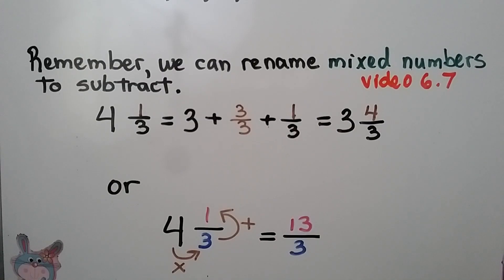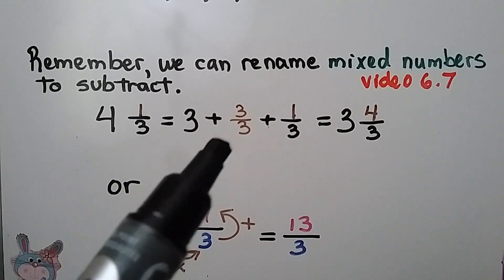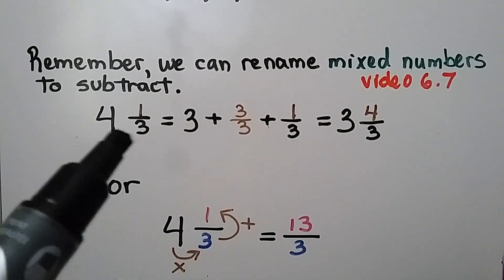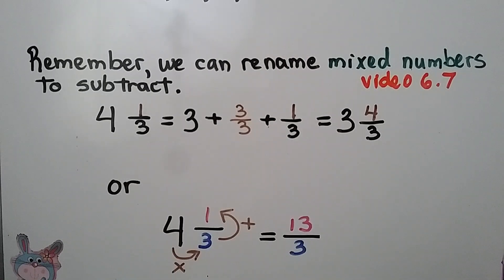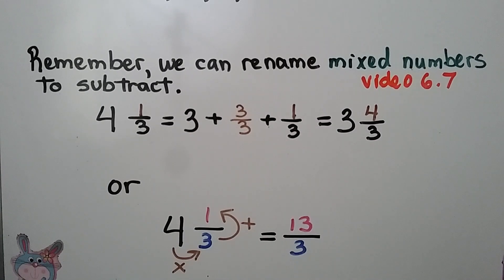You must be very careful as you're renaming mixed numbers to subtract or add — make sure you're doing it correctly. We took the whole number and broke it into one less, and that one less was written as the same numerator and denominator, then grouped together with the fraction part of the mixed number, giving us 3 and 4 thirds. We can also write the entire thing as a fraction greater than 1 by multiplying the whole number by the denominator and adding the numerator, getting 13 thirds. This is very useful when the numerator in the minuend is not large enough to subtract the numerator in the subtrahend.